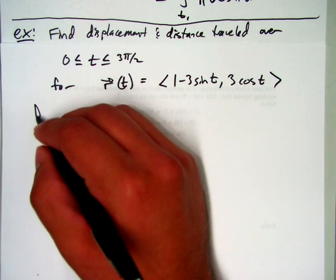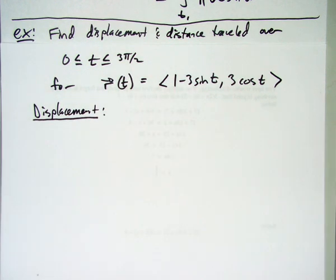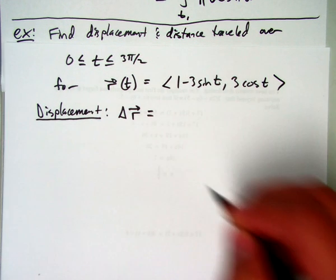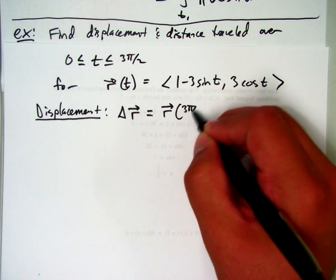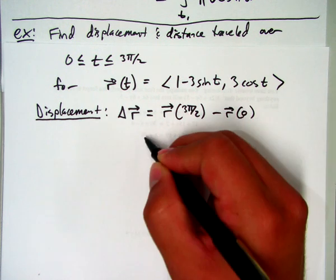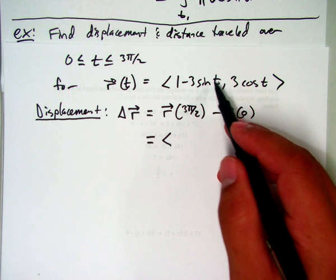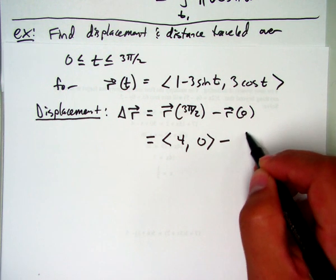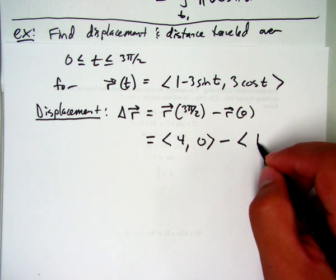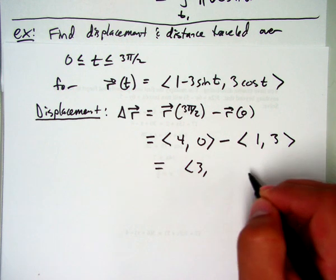So two things we've got to find displacement. Since we already know the position function, I don't have to do the integral formula. I can just find the difference in the two vectors. So the displacement is going to be r(3π/2) minus r(0). Let's calculate those vectors. If I plug in 3π/2, sine of 3π/2 is negative 1, so the first component becomes 4, cosine there is 0. And now I subtract the vector at 0, so we're going to get (1, 3). So our displacement vector is going to be (3, -3).